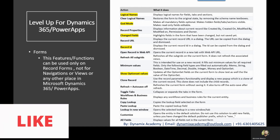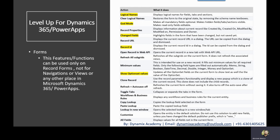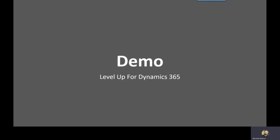Another commonly used feature is Changed Fields, which highlights fields on the form that have been changed but not yet saved. Another very useful action is Record ID, which displays the current record's ID in a dialog — this ID can be copied and used anywhere in your code. Lastly, Show Option Set Values displays all the values of all option sets on that particular form, which is very useful during development.